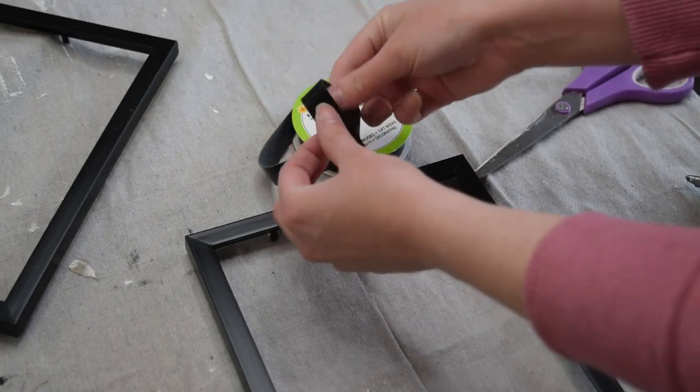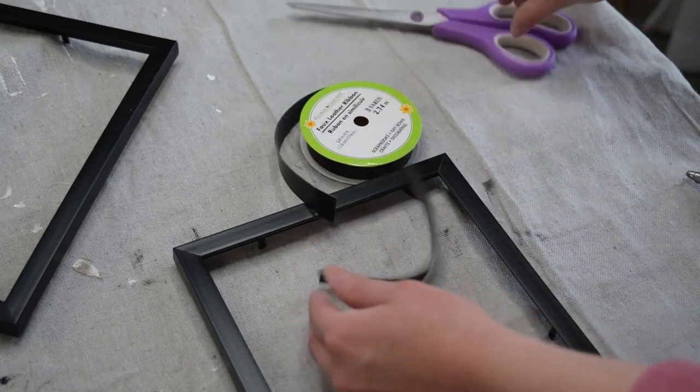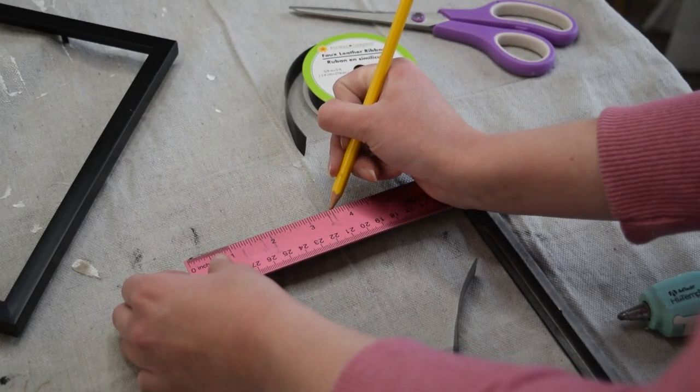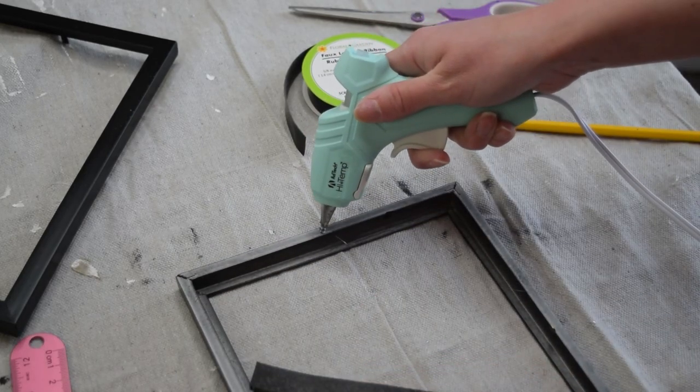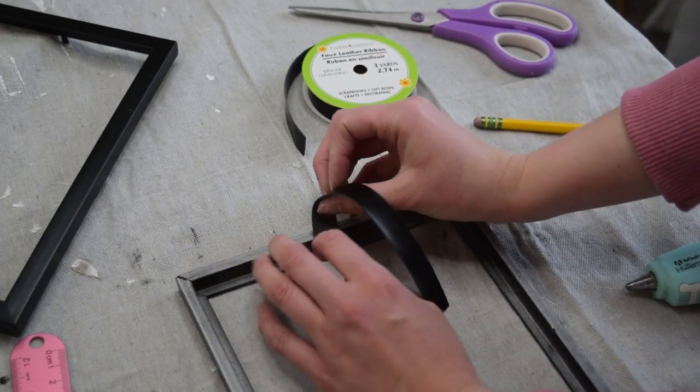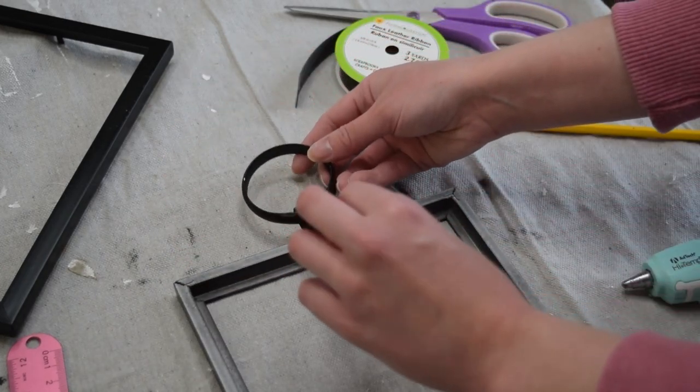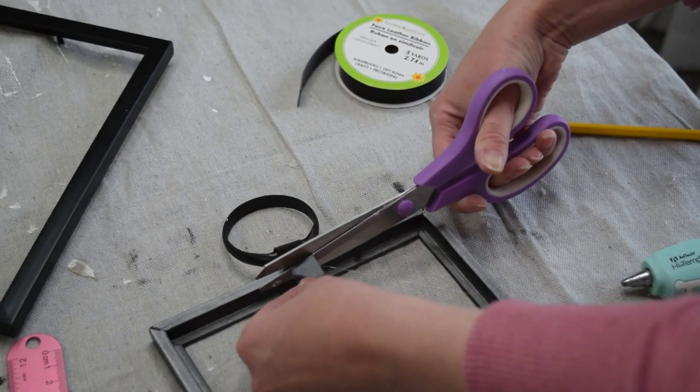Once that spray paint dried, I brought the frames back in and then I'm using some Dollar Tree leather ribbon. You could use any type of ribbon for this project. I just had this in my stash and I think it gives it a nice sturdy look. And then what I did was find the center of the frame and I hot glued down that little leather ribbon piece. I strung on the shower curtain ring and then I cut off the little excess there.